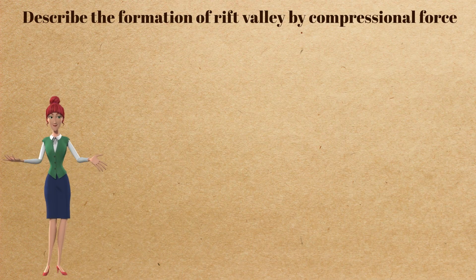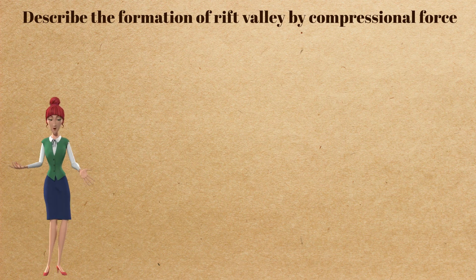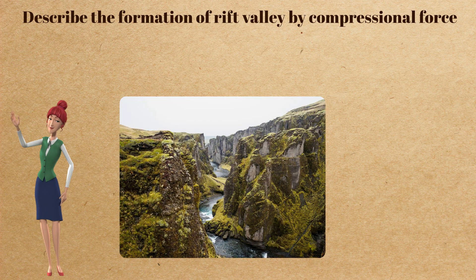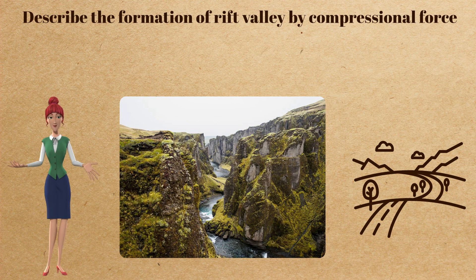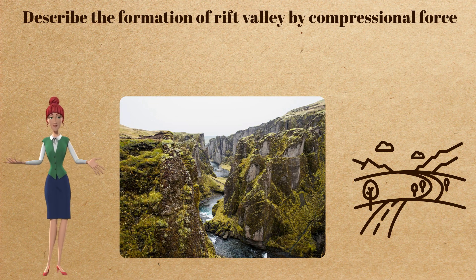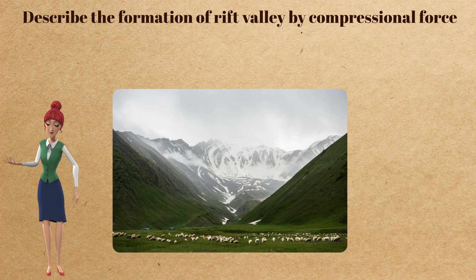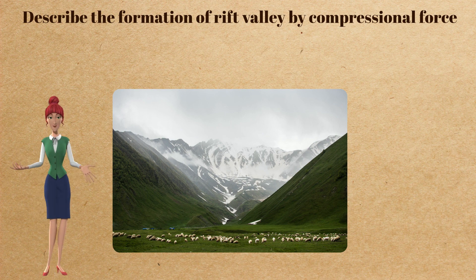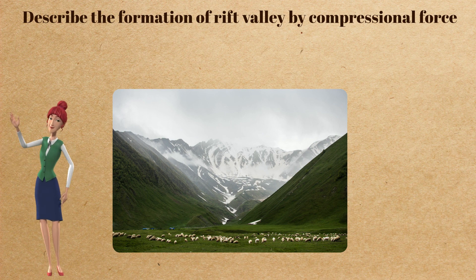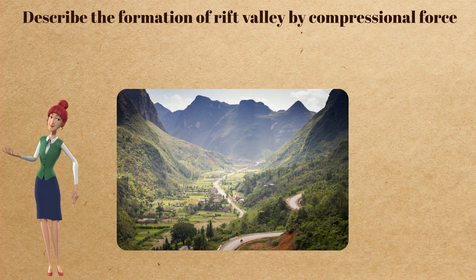A rift valley is formed when compressional forces cause the Earth's crust to fracture, resulting in cracks that form geographic landscape features. These forces are generated when the lithospheric plates move towards each other, pushing against one another and causing the crust to buckle and bend. This pressure forces the surrounding area to sink or rise, creating a valley with a valley floor that drops lower than what surrounds it.